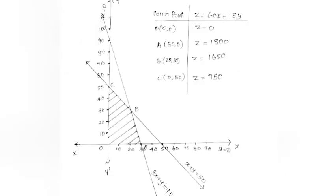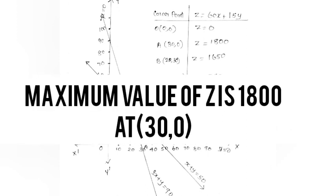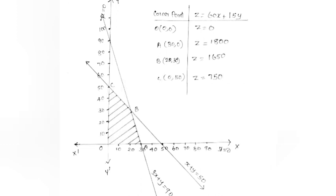Corner points and z = 16x + 15y: At (0,0): z = 0. At (30,0): z = 480 + 0 = 1800 — wait, 16×30 = 480? Actually z = 16(30) = 480. At (20,30): z = 320 + 450 = 770. At (0,50): z = 750. Maximum value of z is 1800 at the point (30, 0).